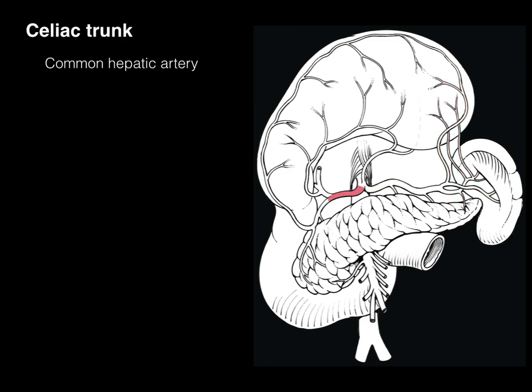The third branch is the common hepatic artery. Whenever you see the prefix 'common,' you know it will bifurcate. One bifurcation is the hepatic artery proper, which gives rise to the left and right hepatic arteries that go to the left and right lobes of the liver, and a cystic artery that goes to the gallbladder. Off the hepatic artery proper is also the right gastric artery, which courses on the lesser curvature within the lesser omentum and forms an anastomotic connection with the left gastric artery.